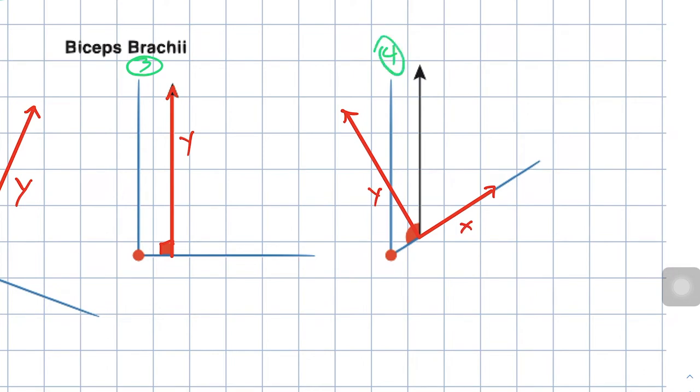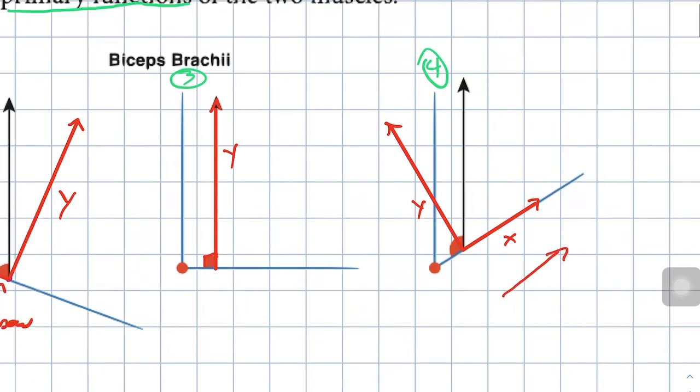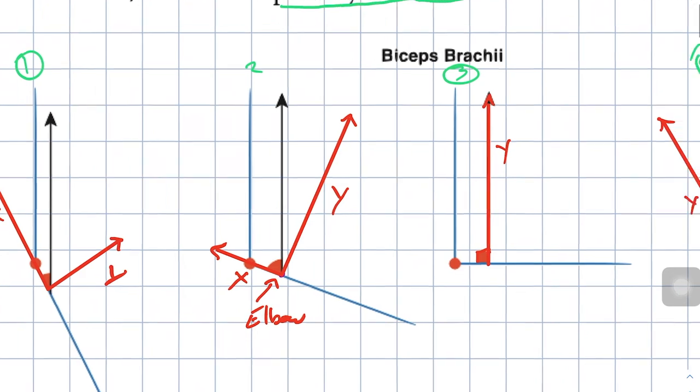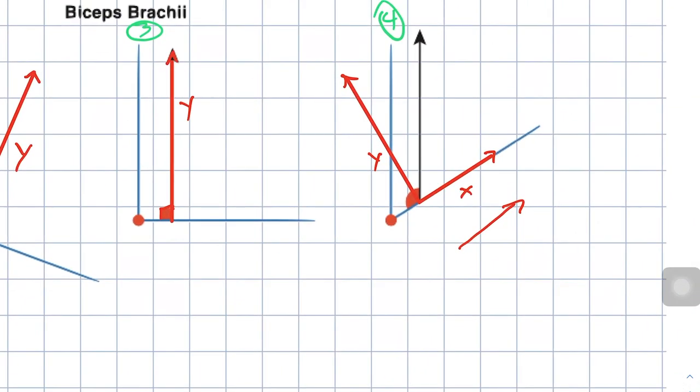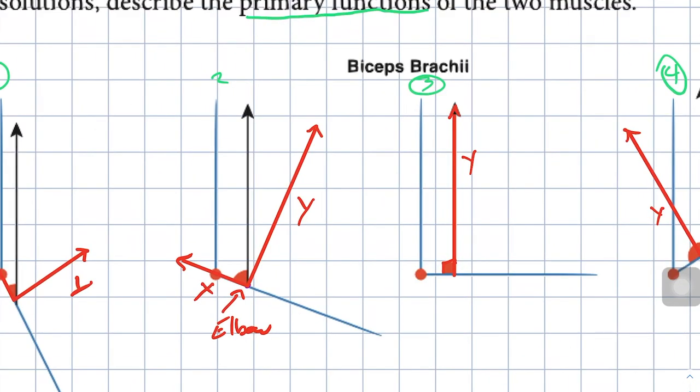If you notice, I now have the x and the y component, but see how the x component is in a different direction than the previous stabilizing components. In this case, at this range of motion past 90 degrees—so at an angle less than 90 degrees at the elbow—the biceps brachii will be causing a destabilizing component. Destabilizing force. And y is still a rotational component or a rotary component. We've done the biceps brachii.